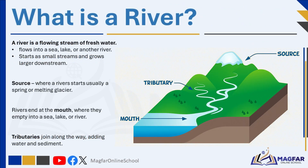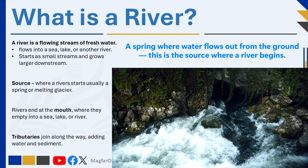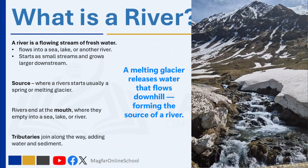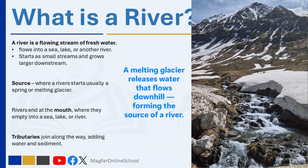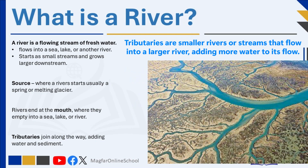A river is a flowing stream of water that leads to the sea, a lake, or another river. The water is usually fresh, and rivers tend to begin as small streams that get larger the further they flow. Rivers generally begin in upland areas and flow downhill because of gravity. A river begins at its source — the high-lying spring or melting glacier where it first emerges — and travels to its mouth, the point where it empties into a lake, sea, or another river. Along the way, smaller rivers called tributaries join in, adding water and sediment to the main channel.